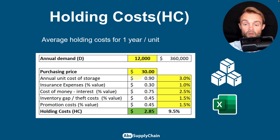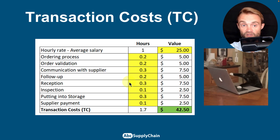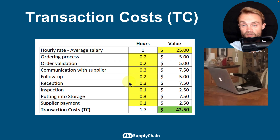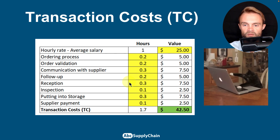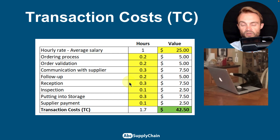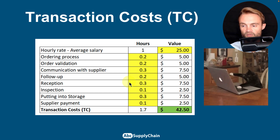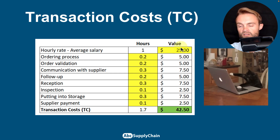The transaction cost is all the time and money you spend to process one order. It's not the easiest to calculate. You can either estimate the average time per order and its cost, or take the total cost of the team responsible for ordering, use maybe 30% of that team's cost, divide by the number of orders per year.